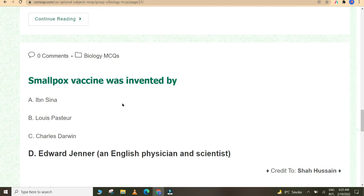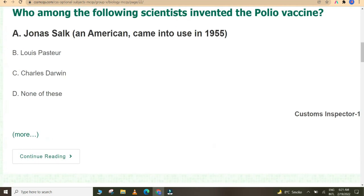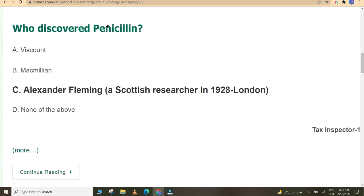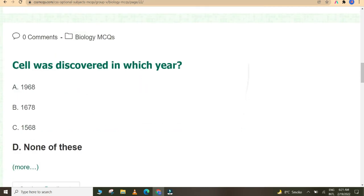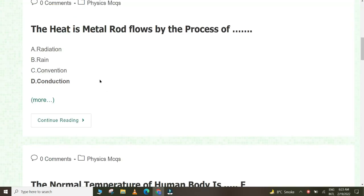Biology has been derived from the Greek word which means the study of life. Smallpox vaccine was invented by Edward Jenner, an English physician and scientist. Who among the following scientists invented the polio vaccine? Jonas Salk, an American, came into use in 1955. Who discovered penicillin? Alexander Fleming, a Scottish researcher, in 1928, London. Cell was discovered in which year? None of the above. Cell was discovered in 1665.